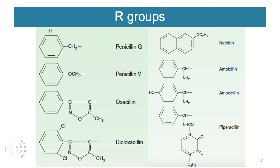R groups determine the antibacterial spectrum that the antibiotic provides. Here are some examples of variations in penicillin based on differences in their R groups: Penicillin G, Penicillin V given for syphilis, oxacillin, dicloxacillin, nafcillin, ampicillin for some systemic and local infections, amoxicillin — one of the most famous and most used drugs under this group — and piperacillin, one of the most important empiric therapies for some systemic or localized infections.